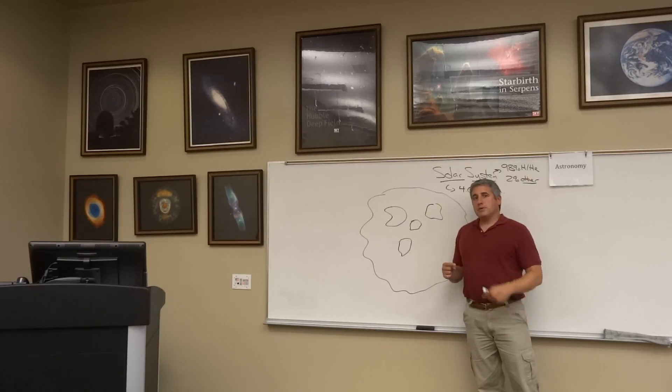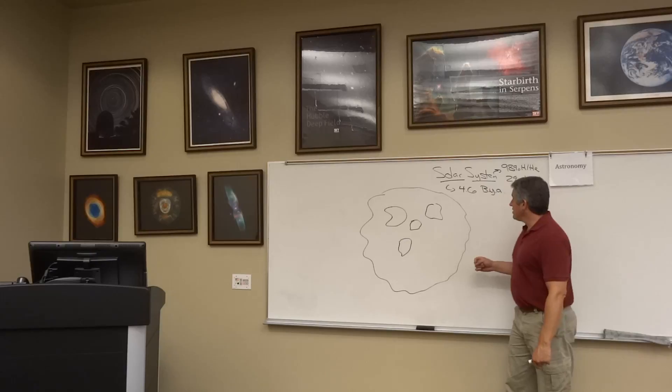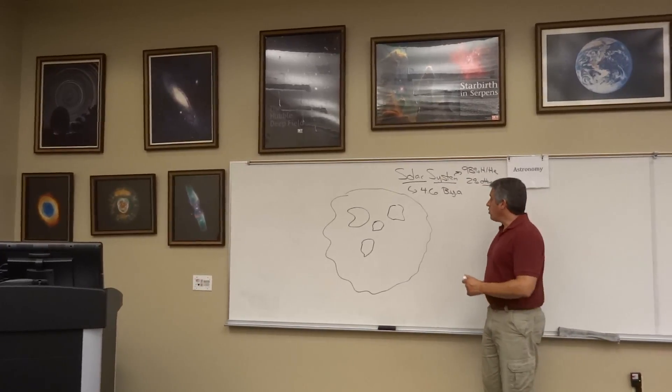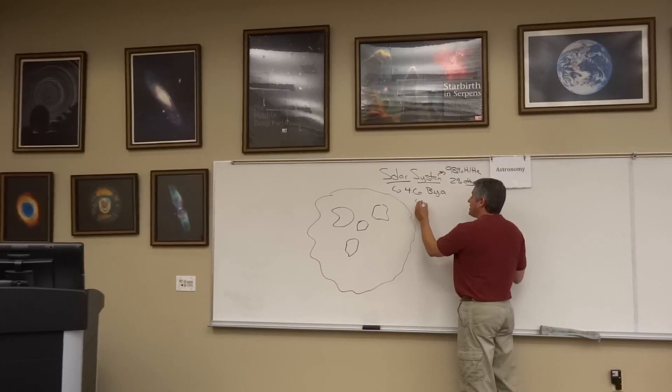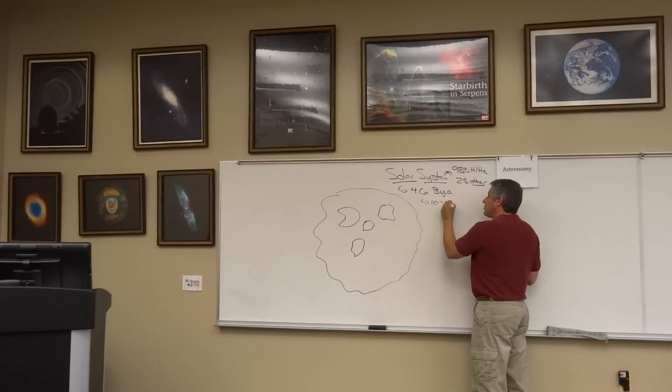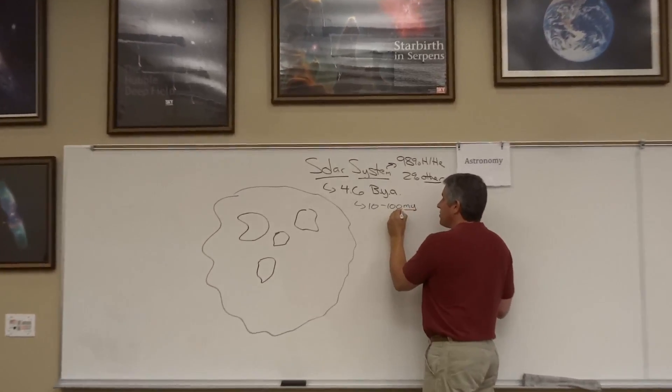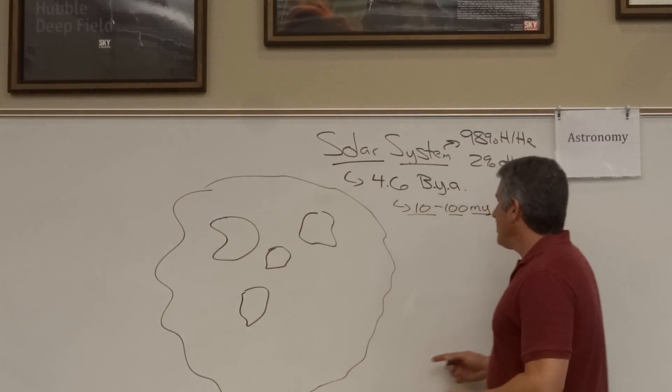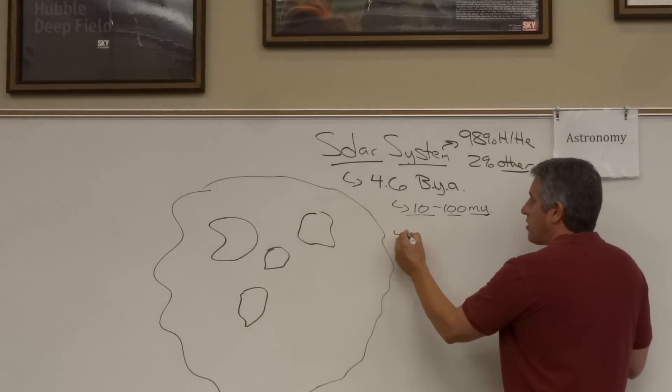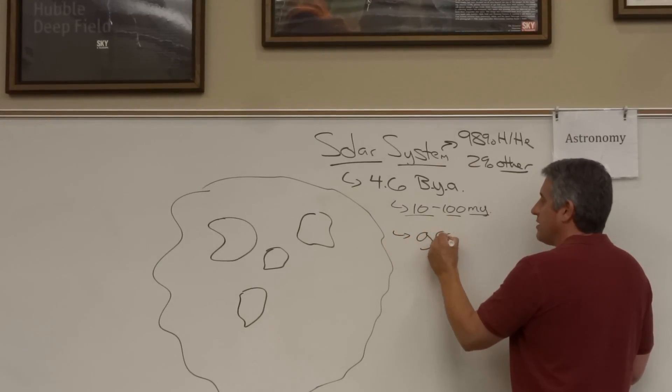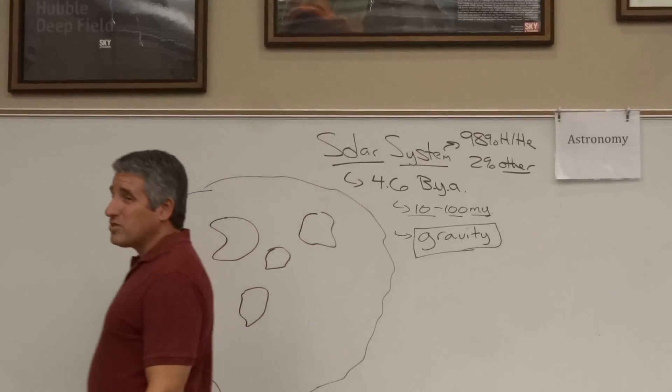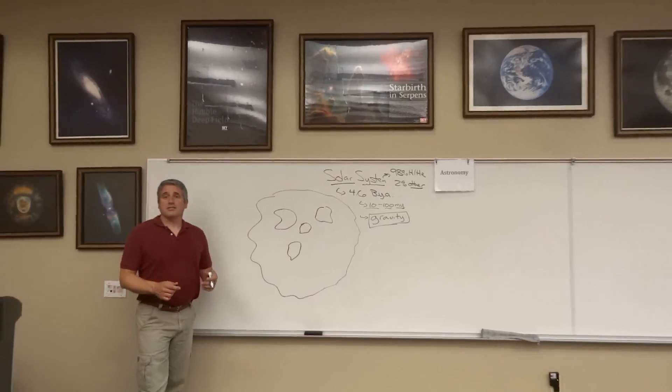So it falls to us now to build ourselves a solar system. This happens around 4.6 billion years ago. The whole process takes anywhere from 10 to perhaps 100 million years, which is a short period of time in comparison to the age of the universe, and it relies on one thing: gravity. Please note that all I need to form a solar system, stars, planets, both terrestrial and jovian, is gravity.